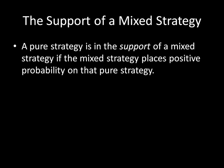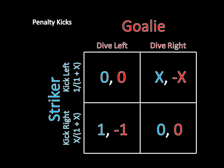In the two-by-two games, this is very straightforward. Going back to the penalty kicks game, the striker kicks left with probability 1/(1+x) and kicks right with probability x/(1+x) in the mixed strategy Nash equilibrium. Both of those numbers are positive, so the striker some of the time will be kicking left and some of the time will be kicking right — both strategies are in the support of this mixture.